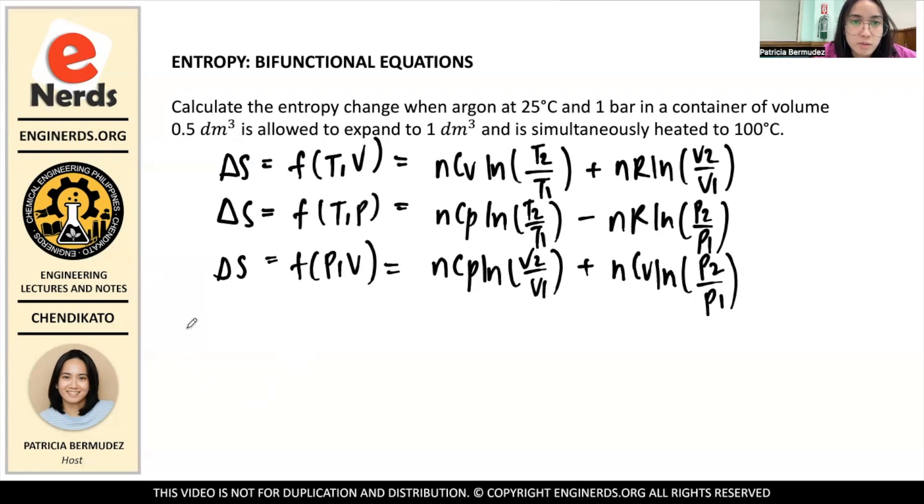So the given in our problem: calculate the entropy change when argon at 25 degrees Celsius and 1 bar in a container of volume 0.5 dm³ is allowed to expand to 1 dm³ and is simultaneously heated to 100 degrees Celsius.